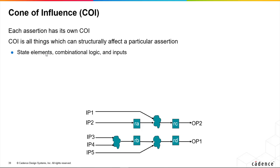Each assertion will have its own COI. If you imagine an assertion with some signals defined in it, it is effectively the structural fanning cone for all signals in that assertion.